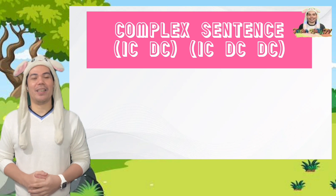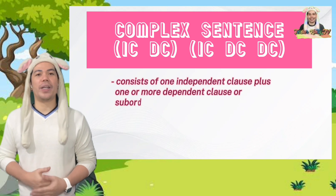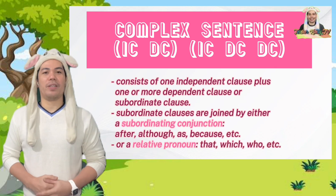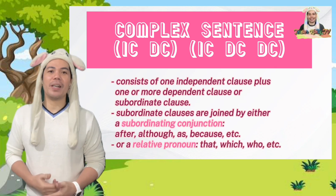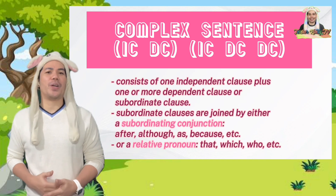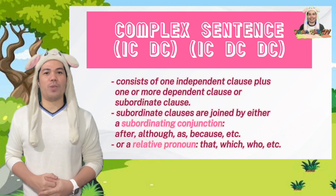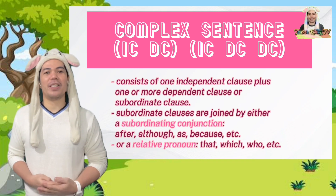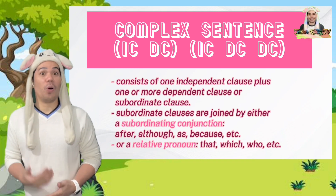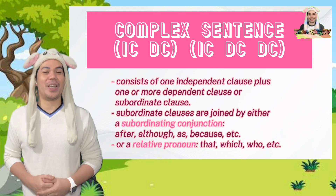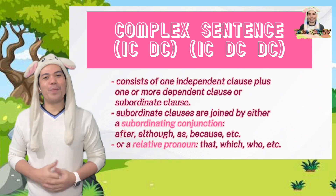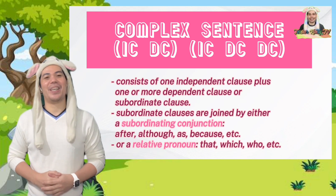After that is the complex sentence. It consists of one independent clause plus a dependent or subordinate clause. Subordinate clauses are joined by either a subordinating conjunction — such as after, although, as, because, etc. — or a relative pronoun, which is that, which, who, etc. A few examples of complex sentences are: